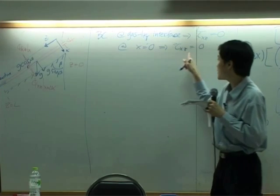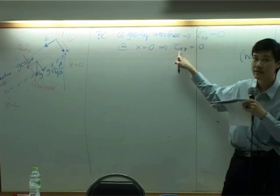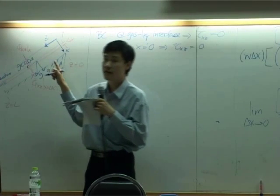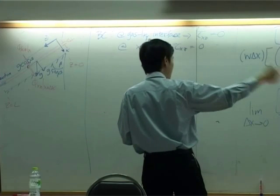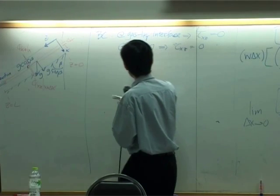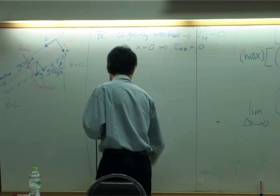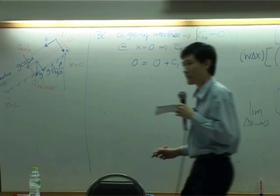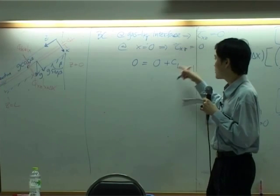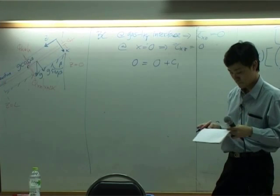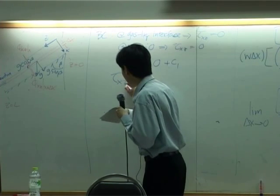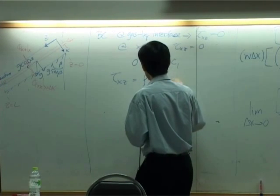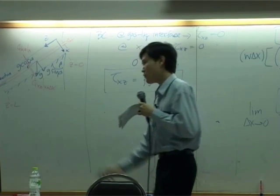Remember, xz does mean z momentum transported in x direction. So in x direction is going perpendicular to this interface. So apply that to equation one. That means zero equal to zero plus C1. Or C1 is zero. Then you have tau xz equal to rho g x cosine beta. That's the first equation we got.